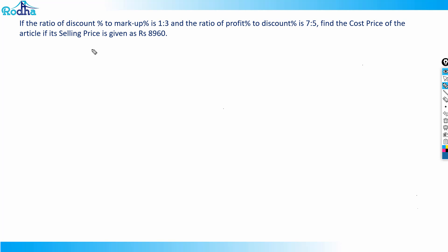Let's look at the next question. It says that the ratio of discount percentage to markup percentage is 1:3, and the ratio of profit percentage to discount percentage is 7:5. Find the cost price of the article if its selling price is given as rupees 8960.